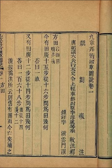The full title of the Nine Chapters on the Mathematical Art appears on two bronze standard measures dated to 179 CE, but there is speculation that the same book existed beforehand under different titles. Most scholars believe that Chinese mathematics and the mathematics of the ancient Mediterranean world had developed more or less independently up to the time when the Nine Chapters reached its final form.